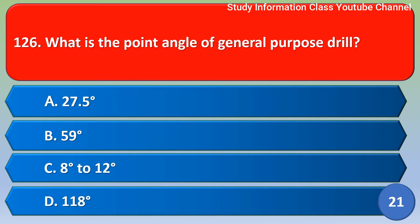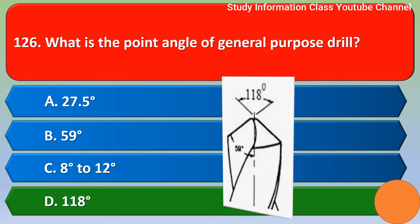Next question: What is the point angle of a general purpose drill? Option A: 27.5 degrees, Option B: 59 degrees, Option C: 82 degrees, Option D: 118 degrees. The correct answer is Option D — 118 degrees.